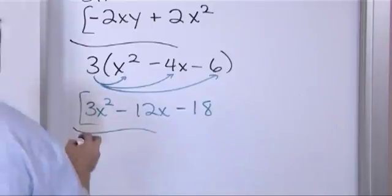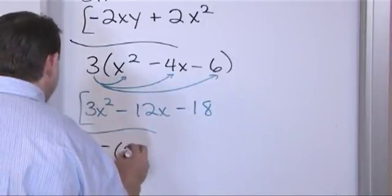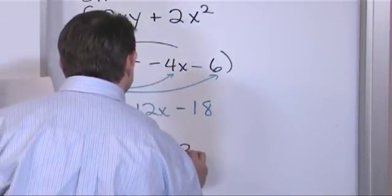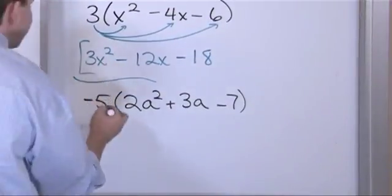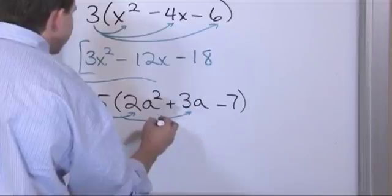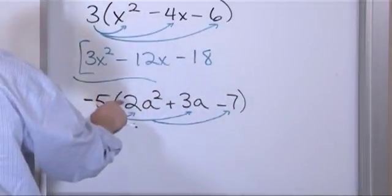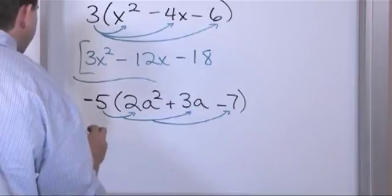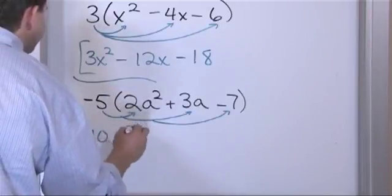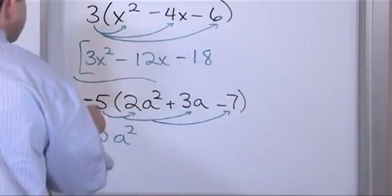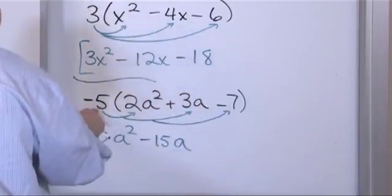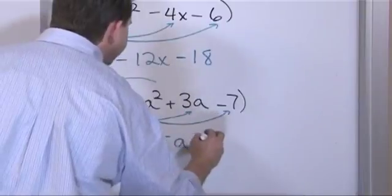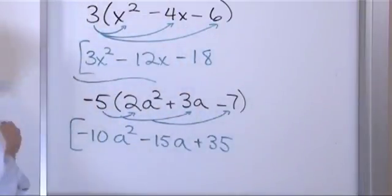What if we have negative 5 times (2a squared plus 3a minus 7)? This five gets multiplied by every term. Two times five is ten, don't forget the negative, so negative 10a squared. Negative five times three is negative 15a. Negative five times negative seven is positive thirty-five. The answer is negative 10a squared minus 15a plus 35.